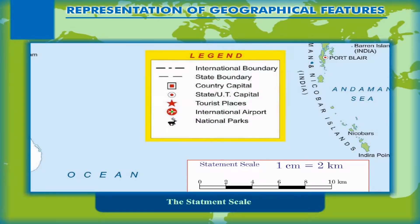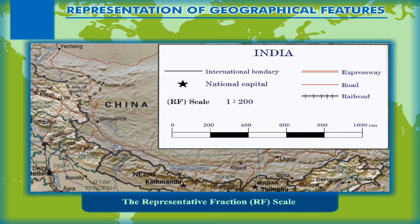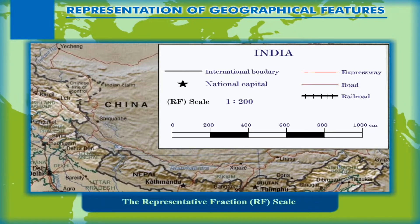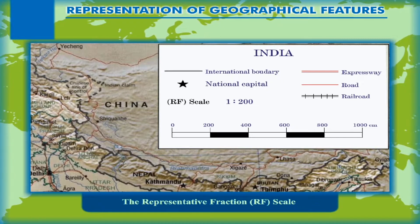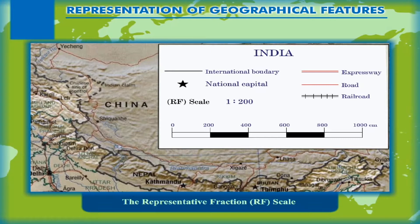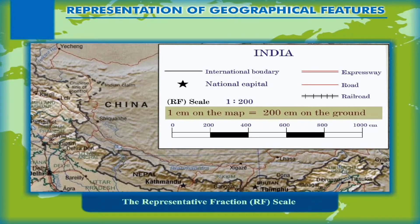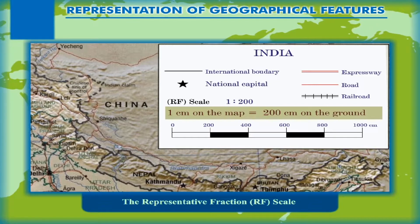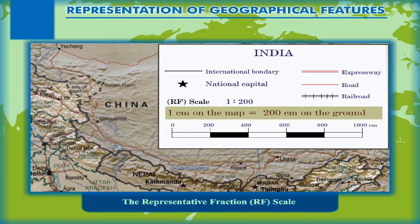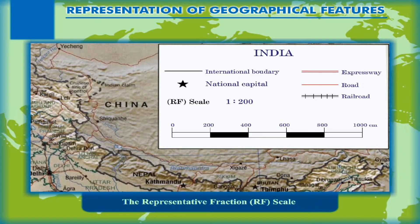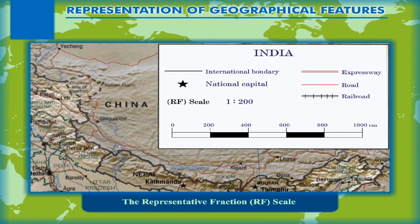The representative fraction scale, or RF, overcomes this disadvantage of the statement scale. The RF is given as a ratio of the distance on the map — taken as unity — to the corresponding distance on the ground, where both values have the same unit and therefore no unit is stated. For example, 1:200 means one centimeter on the map is equal to 200 centimeters on the ground, or one inch equals 200 inches on the ground. Since it has no unit, the RF can be universally used all over the world.